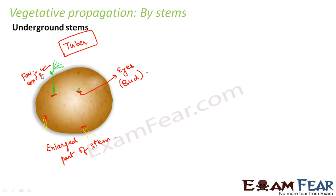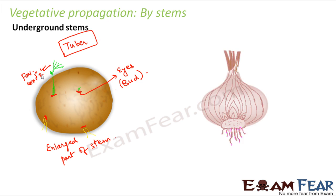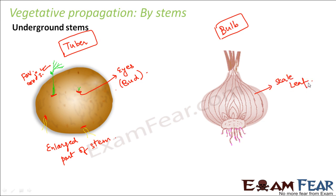Another example of underground stems giving rise to new plants is the onion. Similar to the tuber of potato, in onion this structure is known as the bulb. Onion has a short underground vertical shoot with thickened leaves. Many leaf-like layers are arranged around each other — these are called the scale leaves of onion, and the entire structure is called the bulb. The base of the onion is termed the disc, and just above the base are structures called axillary buds.